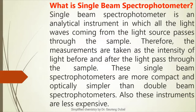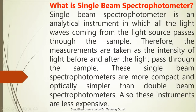So the question: what is a single beam spectrophotometer? A single beam spectrophotometer is an analytical instrument in which all the light waves coming from the light source pass through the sample. Therefore, the measurements are taken as the intensity of light before and after the light passes through the sample.